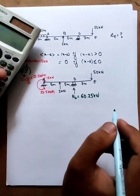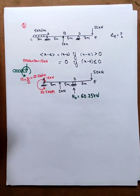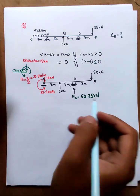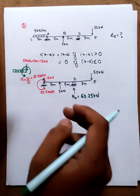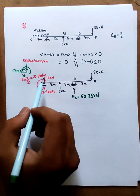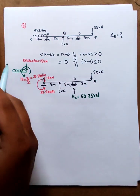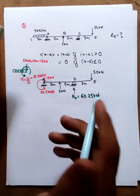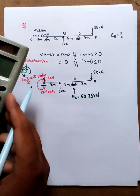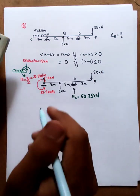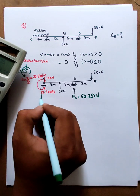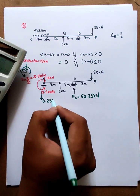The value is 60.25. The total downward force is 15 plus 50, and the total upward force gives 60.25.